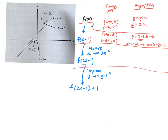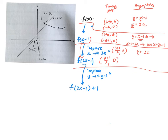Next we replace x with 2x. This means all x coordinates are divided by 2. So 3 plus a becomes (3 plus a) over 2, comma 6. Negative a plus 1 becomes (negative a plus 1) over 2, and 0 stays 0. The asymptote y equals x minus 1 becomes y equals 2x minus 1 minus b. The vertical asymptote x equals 2a plus 1 becomes x equals (2a plus 1) over 2.